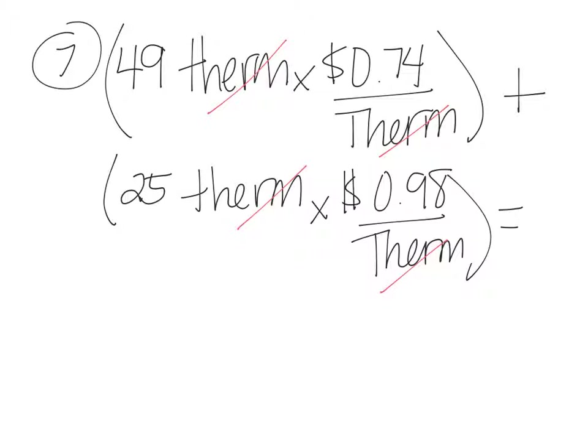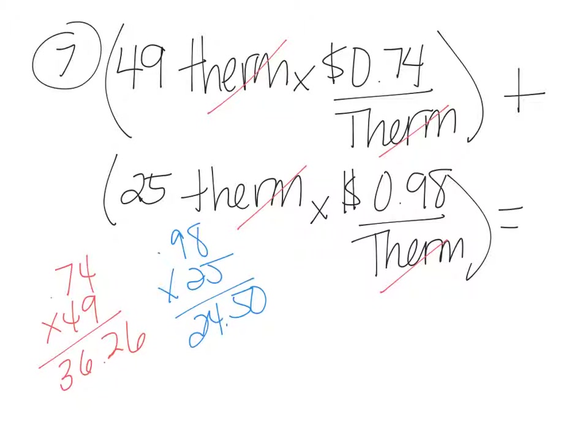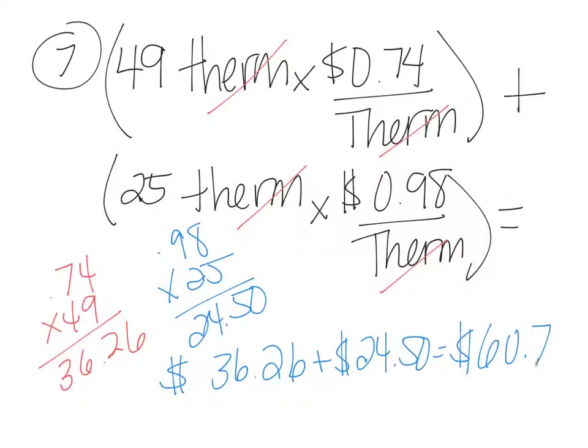And so I'm going to take 0.74 times 49, and I'm going to get 36.26. And then over here, I'm going to take 0.98 times 25, and I'm going to get 24.5 when I do this math on the side. And so I'm going to end up here with 36.26 plus 24.50. And so my total electric bill is $60.76.